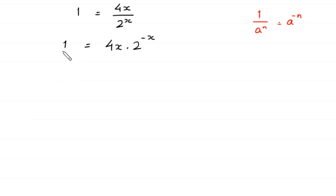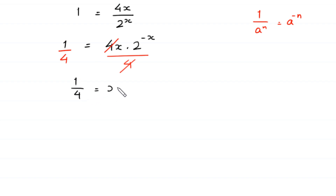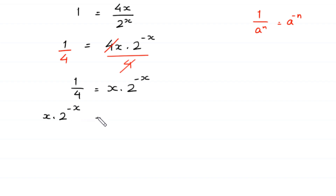Now from here we divide both sides of this equation by 4. At the right side we divide by 4, so this 4 will be cancelled, and we are left with 1 over 4 is equal to x times 2 to the power negative x. Now we write x times 2 to the power negative x at the left side and 1 over 4 at the right side, giving us x times 2 to the power negative x is equal to 1 over 4.